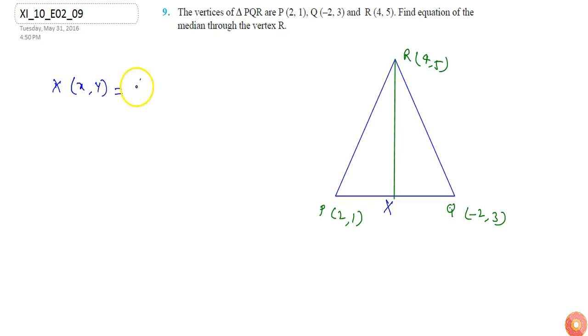So it will be (2-2)/2 and (1+0)/2... the midpoint calculation gives us X at (0,2).